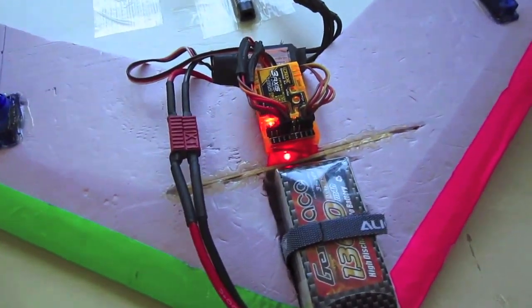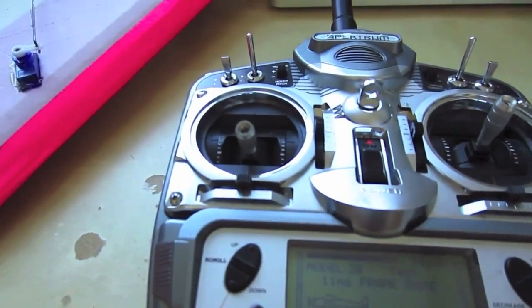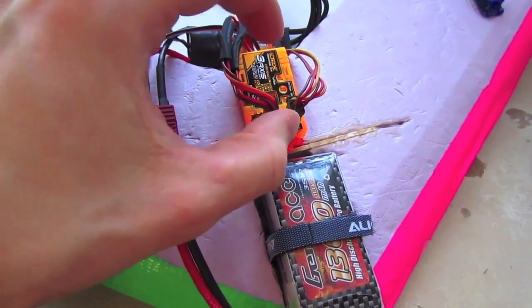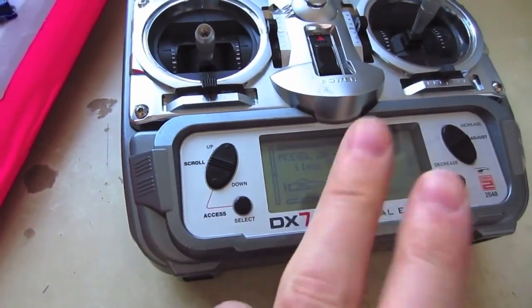Alright, so first of all, I had to go into my transmitter. I'm using the DX7 here, but for whatever you're using, the delta mixing is on board this unit, the stabilization unit, so you need to take off delta mixing on here.